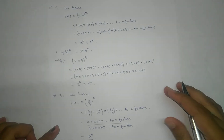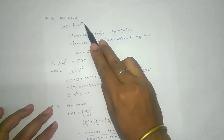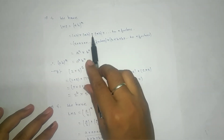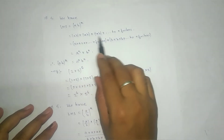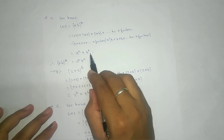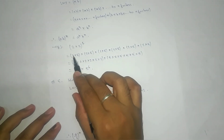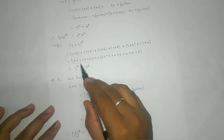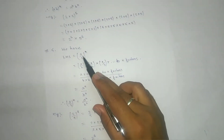The fourth and fifth laws both come under the same category — one in multiplication form and one in division form. For the fourth law: a into b to the power n means a times b repeated n number of times. If we open the bracket, we can write a repeated n times and b repeated n times, giving us a to the power n times b to the power n. For example, 2 into 5 to the power 6 means 2 times 5 written 6 times, giving 2 to the power 6 times 5 to the power 6.